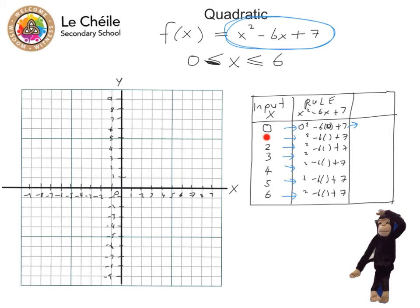1 is the next number. So everywhere you see x, we're just going to put in 1. So we'll put in 1 there and 1 there. 2 is our next number. So let's put in 2 everywhere we see x. And 3 is our next number. So let's put in 3. 4 is our next number. So let's put in 4. 5 is our next number. Let's put in 5. 6 is our next number. Let's put in 6.